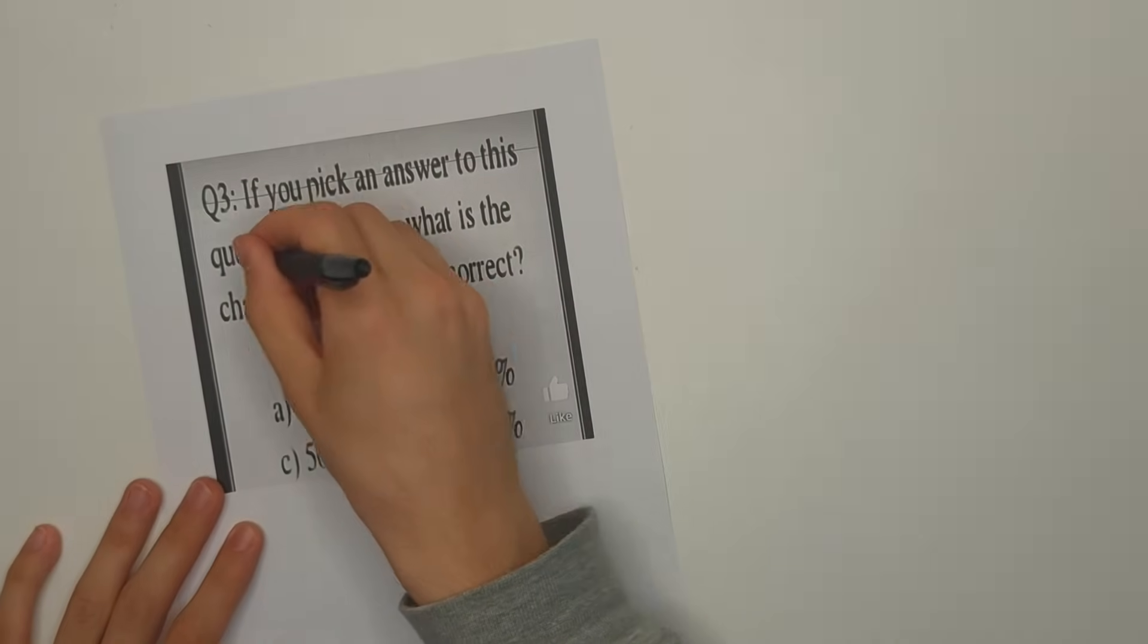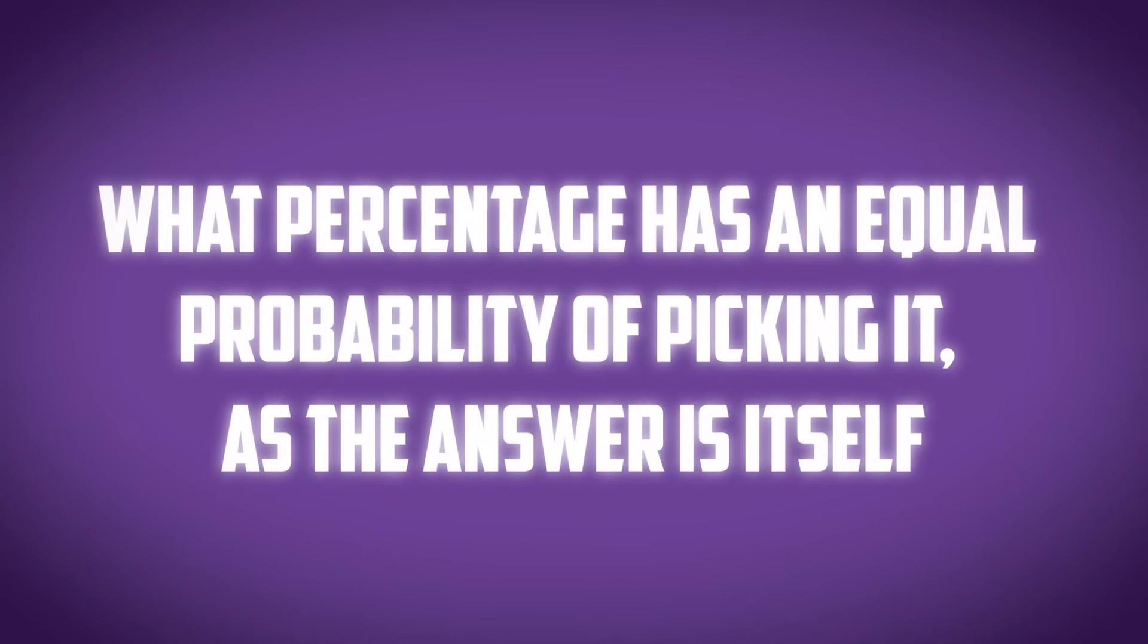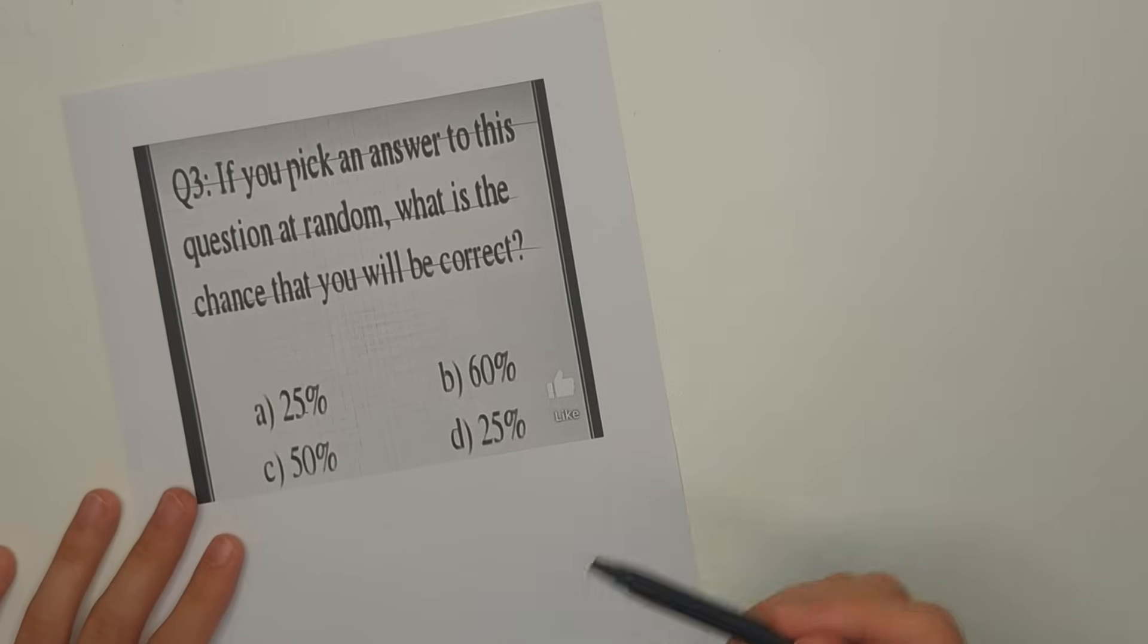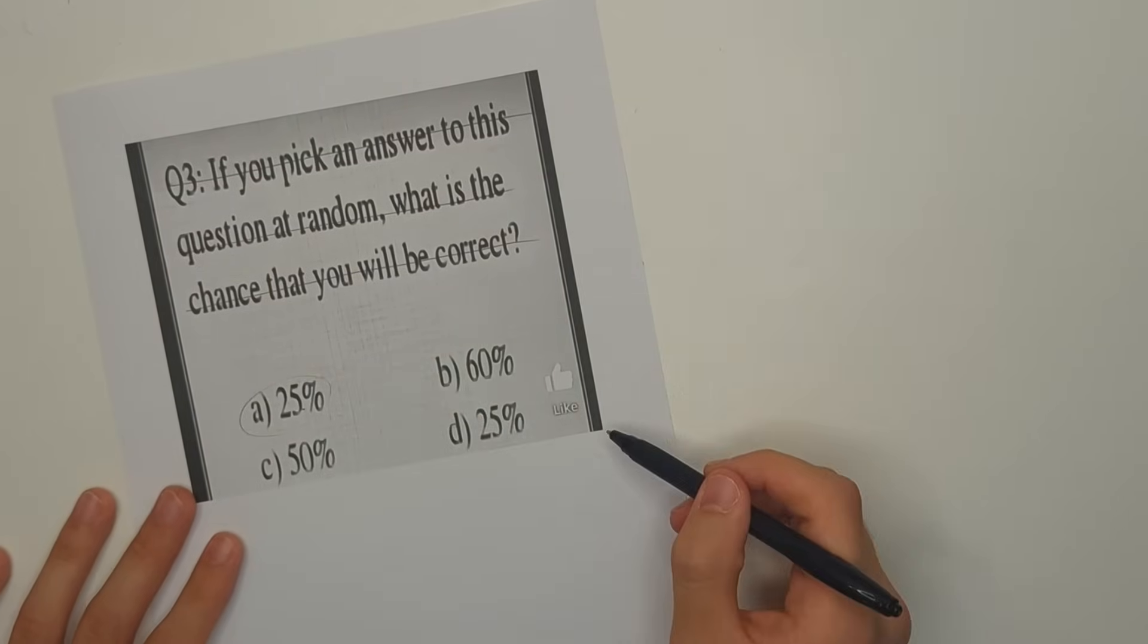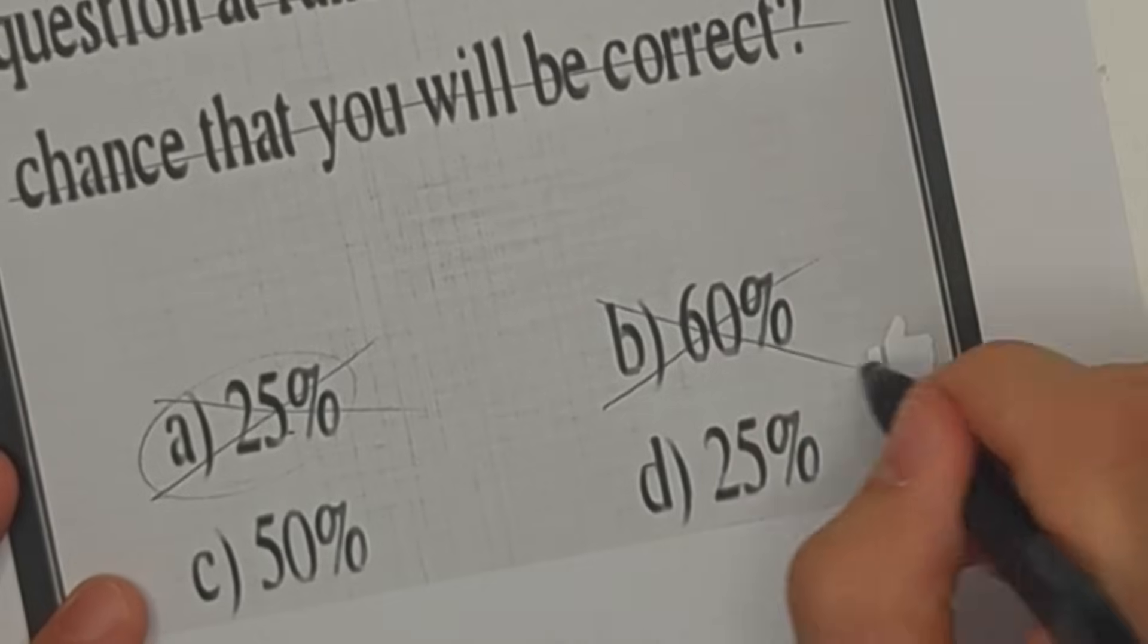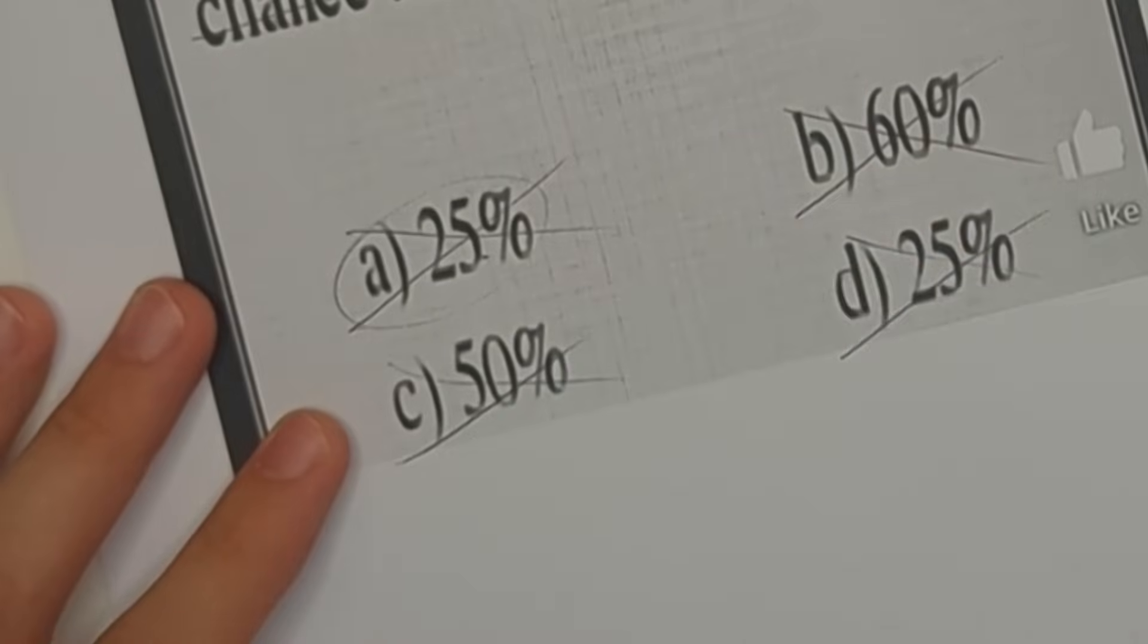So this entire question can actually be reworded to what percentage has the equal probability of picking it as the answer itself. So what that means is, is the percentage 25 equal to the probability that you're going to pick 25%? If the answer is no then it's not that answer. We can eliminate 60%, we can also eliminate 25% again, and we can eliminate the 50% because there's not a 50% chance of picking it.